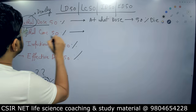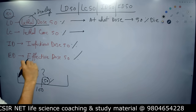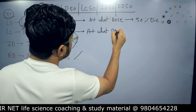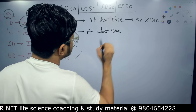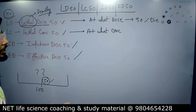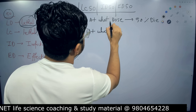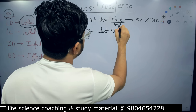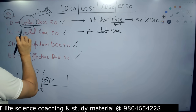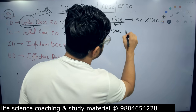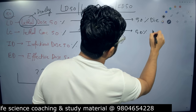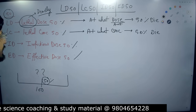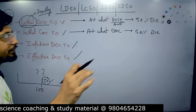Lethal Concentration 50, or LC50: at what concentration will 50% of the test population die? Remember, dose means amount, while concentration is different from amount. Lethal Concentration is at what concentration 50% of the test population dies. That is Lethal Concentration 50, or LC50.